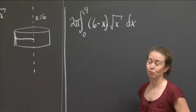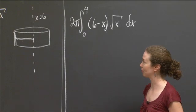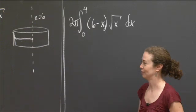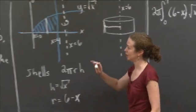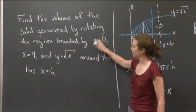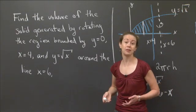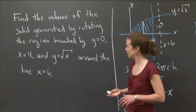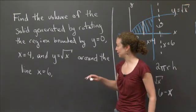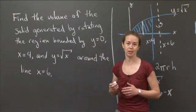I'm going to go back and make sure we remember what all the pieces are and that we feel comfortable with doing this type of problem. I'll let you finish and evaluate that if you would like to know an actual number. We were finding the volume of the solid generated by rotating a certain region around the line x=6.